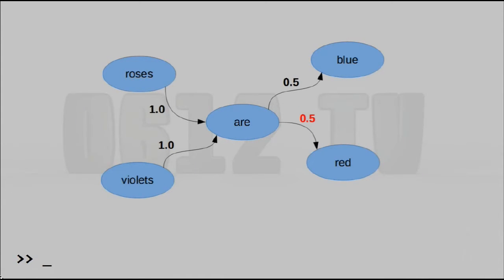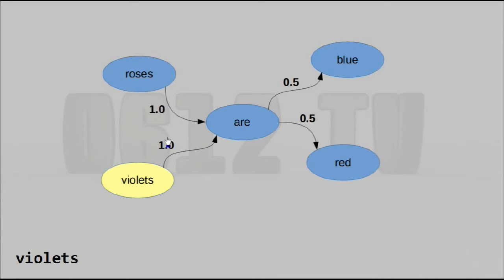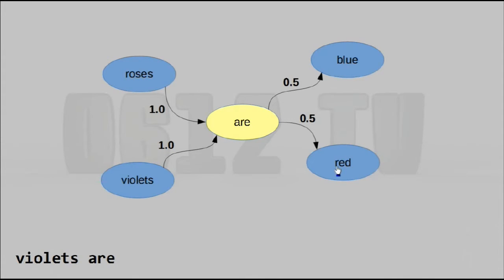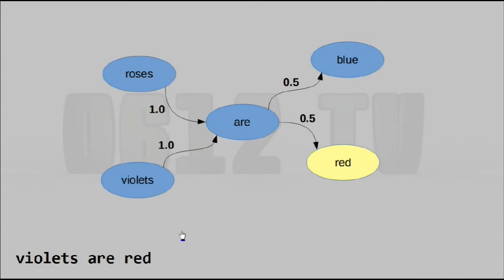Each time you insert new inputs, it is sort of overlaid on top of the older inputs, and probabilities are tweaked as necessary. At any point, we can take the model we have and use it to generate some sentences. We pick a random starting point — in this case, the term 'violet.' Because the probability here is 1, 'violets' can only transition to 'are.' But once we've hit 'are,' there's a 50-50 chance between 'blue' and 'red,' so there's nothing to stop you from going to 'red.' Hence, we've generated the term 'violets are red,' which isn't true, but according to this model it's entirely possible. That, in essence, is how you build up a Markov chain and use it to generate sentences.